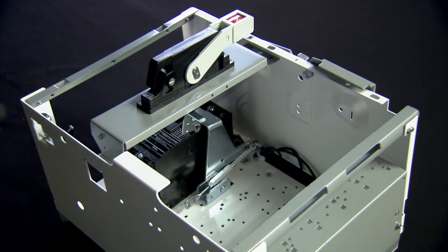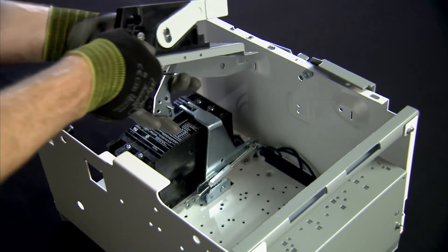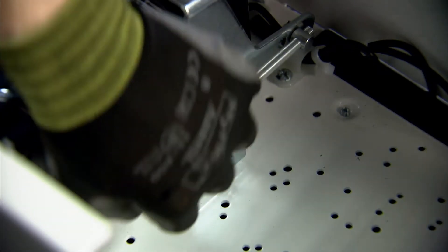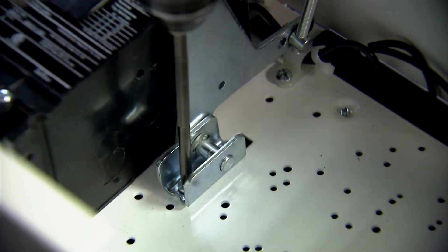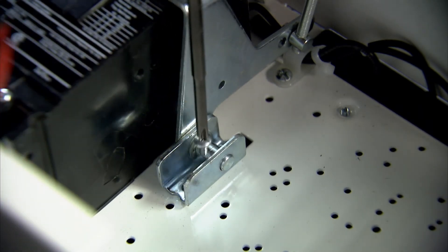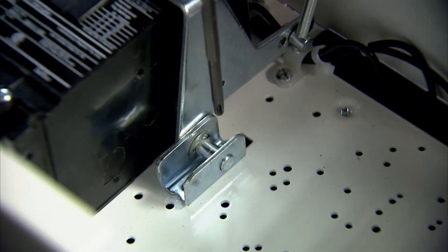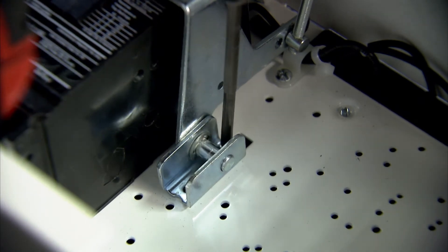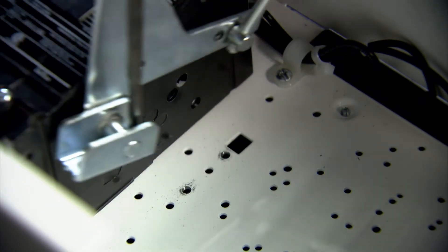Lift the handle out of the unit. To remove the linkage assembly, unscrew the two screws holding the assembly to the back plate. Lift the assembly out of the unit.